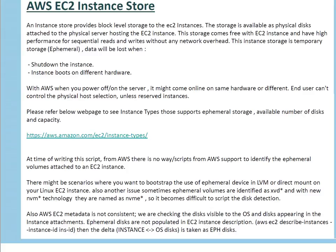So first thing: what is instance store? An instance store provides local level storage to EC2 instances — not to every or all types of EC2 instances, but particular instance types which get this add-on benefit. The storage is available as a physical disk attached to the physical server hosting the EC2 instance. You can consider a physical server on which your instance is hosted — you are going to use the physical drives of that particular blade or server. EBS is network attached storage, so the local one is instance store. The instance store storage comes free with the EC2 instance.